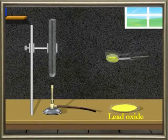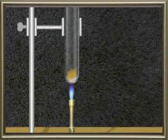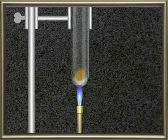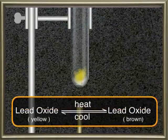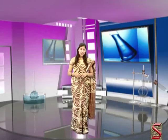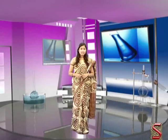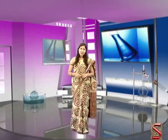Take a pinch of powdered lead oxide in a dry test tube and heat it gently. The yellow coloured lead oxide turns brown. Now cool the test tube — you can see the brown colour vanishing and becoming yellow again. When heat produces a temporary change, the composition of the substance remains the same and no new substances are formed, but there is only a change of state. This is called physical change.